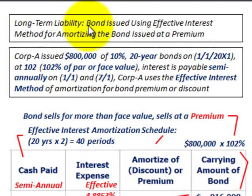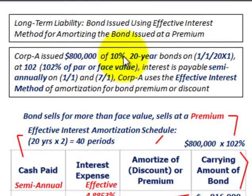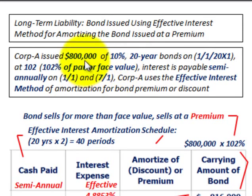What we're going to be looking at here is a long-term liability, specifically a bond issued using the effective interest method for amortization, and this bond is going to be issued at a premium. Corporation A issues $800,000 worth of bonds at 10%, as 20-year bonds issued on January 1st of 20x1 at 102 — that is, 102% of the par or face value. The interest is payable semi-annually on January 1st and July 1st each year for the next 20 years.